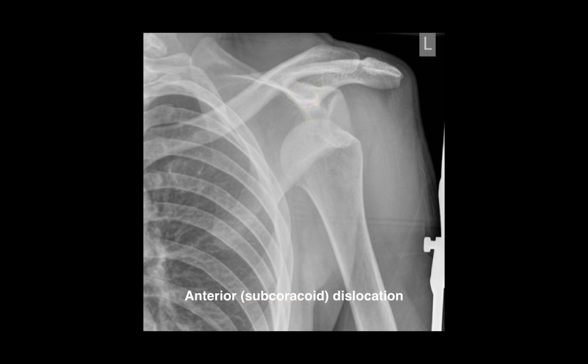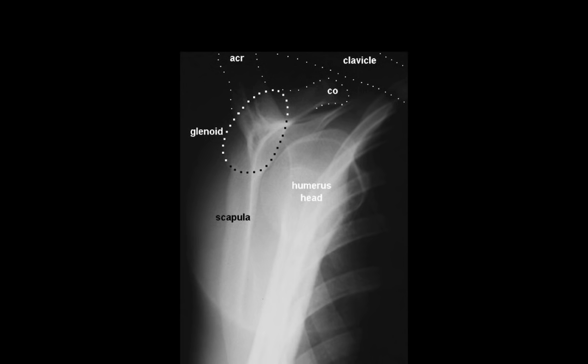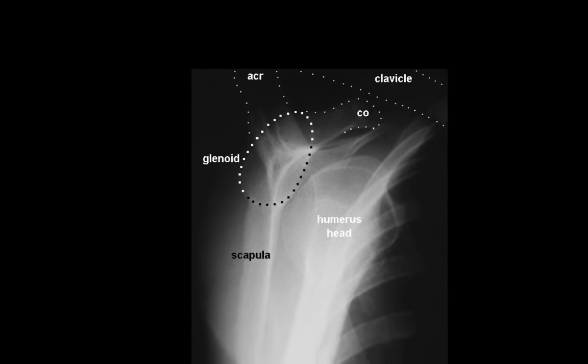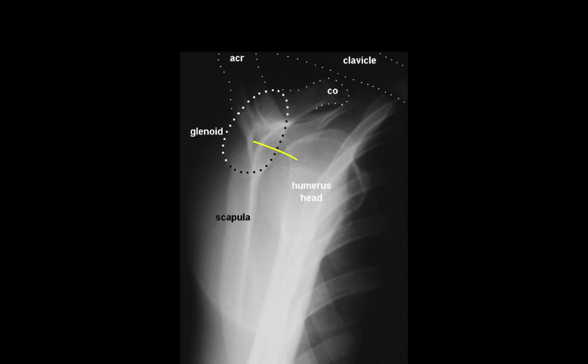Anterior dislocations comprise 95% of all dislocations. We can confirm the anterior dislocation by looking at our lateral view. Here we can see the glenoid fossa is empty. The humeral head is anterior to it, towards the ribcage.